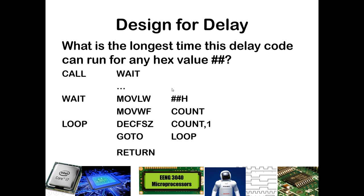If this is our basic wait subroutine structure, how long would be the longest time this delay code could run for any number we could put in? You might be tempted to say let's put the largest number — that would be 0xFF. With 0xFF, the decrement would go from 255 down to 254, 253, and every time it wouldn't skip until it gets to 1, and then it would skip. So this would decrement 254 times without skipping and once with skipping. You might also notice that if you start at 0, it would decrement to 255 first — so in fact, the longest delay would have this starting at 0, going down to 255 first, adding a little more time through the loop.